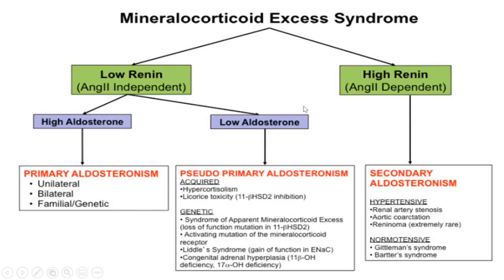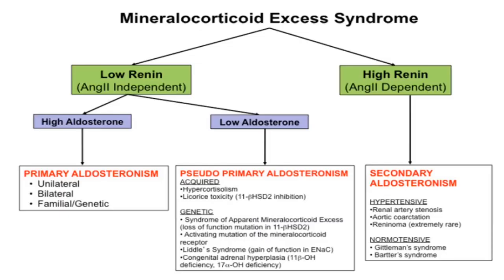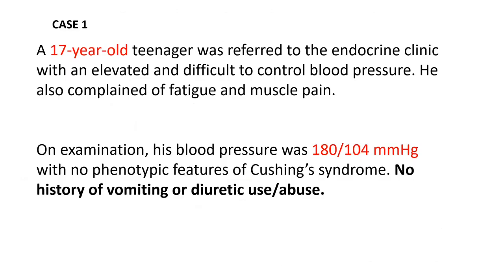Let's start with Case 1: a 17-year-old teenager referred to the endocrine clinic with elevated and difficult-to-control blood pressure, also complaining of fatigue and muscle pain. On examination, blood pressure is 180/104 mmHg — very high. He does not have any phenotypic features of Cushing's and has no history of vomiting or diuretic abuse, which is extremely important to establish when evaluating hypokalemic metabolic alkalosis.